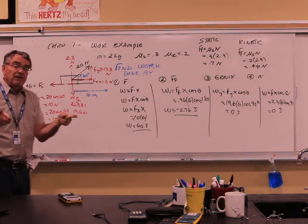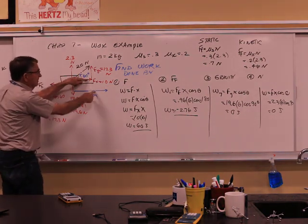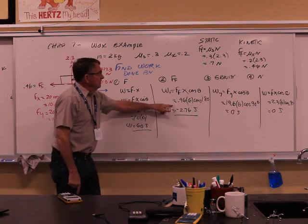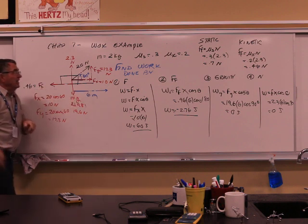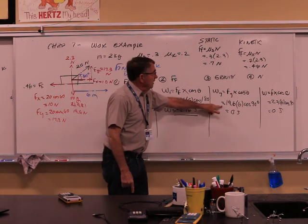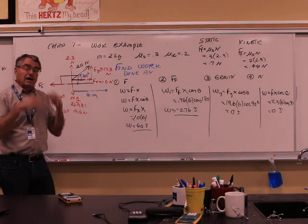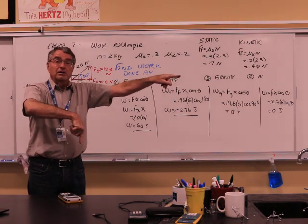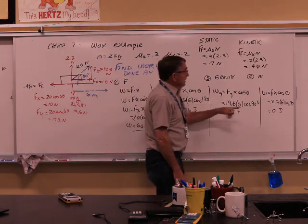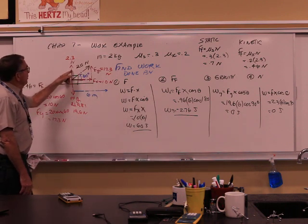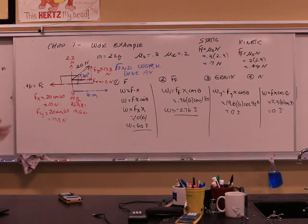To summarize: you do dot products — how much one vector is in the other vector's direction. For force F, the x-component and displacement are in the same direction — positive work. For friction, they are opposite — angle is 180 — negative work. For gravity, it acts vertically and displacement is horizontal — angle is 90 — zero work. Same with the normal force — it's perpendicular to displacement — angle 90 — no component, zero work. Anyway, that's the example. Do your homework — I'm done. Bye bye.